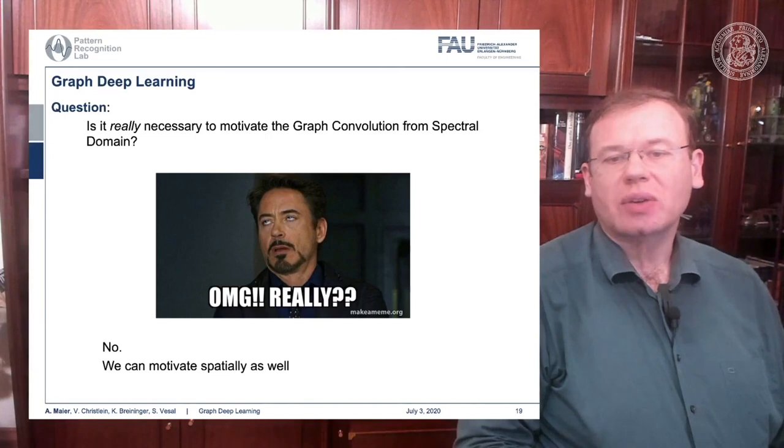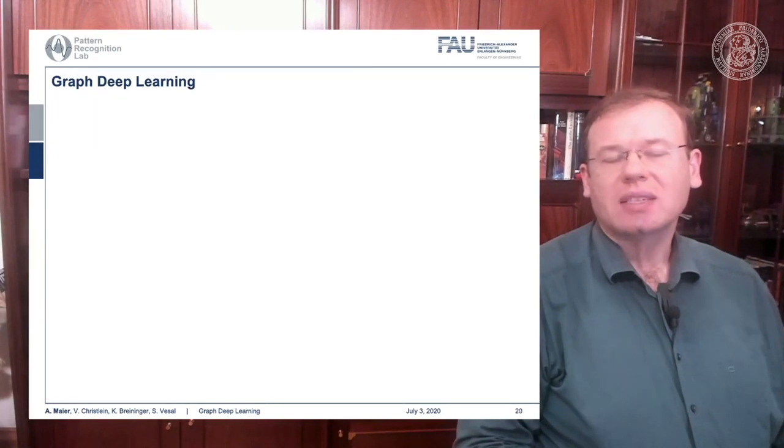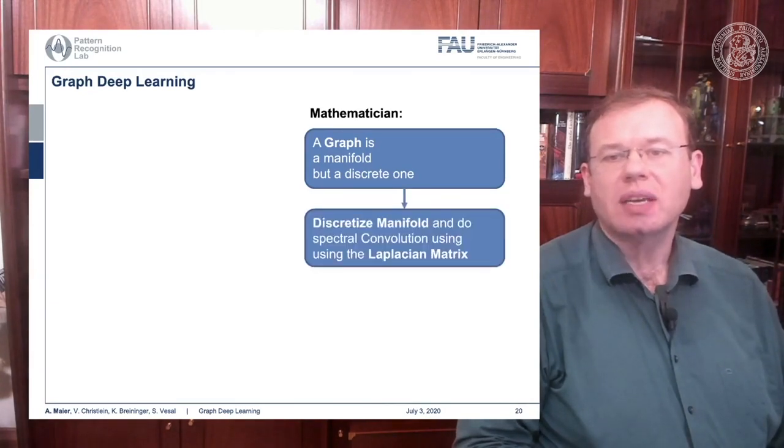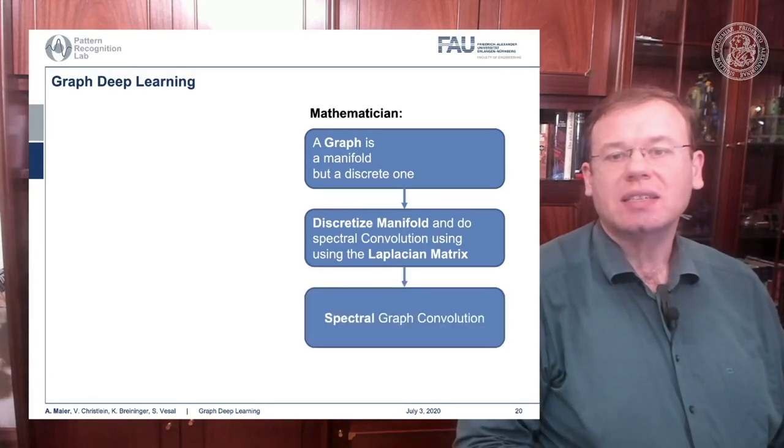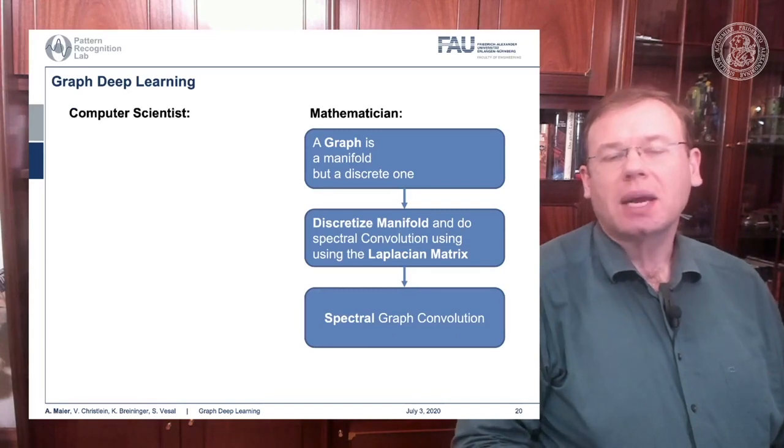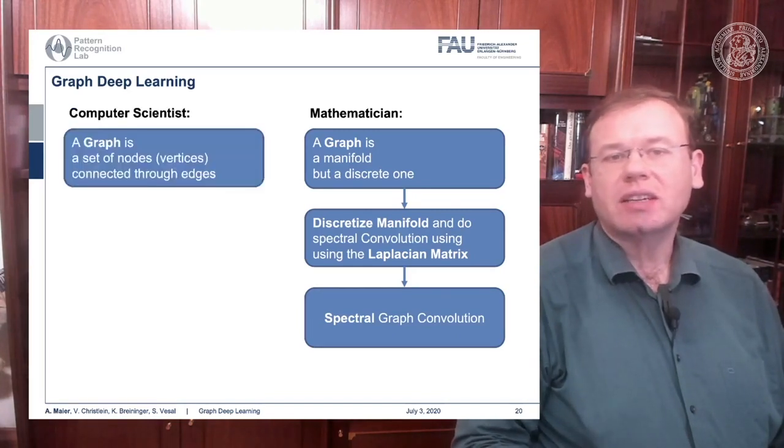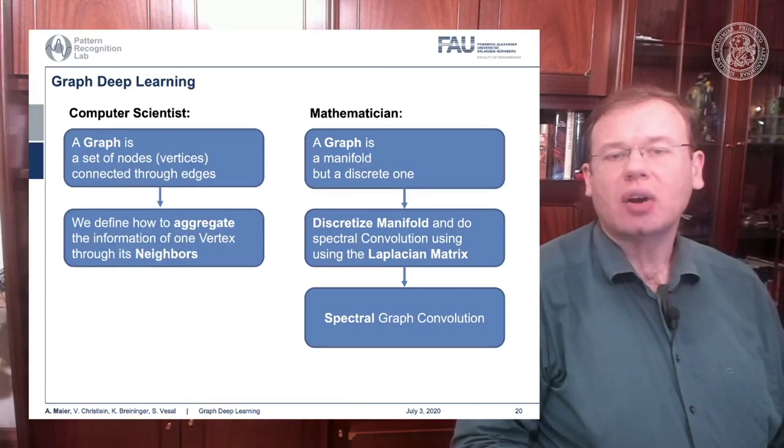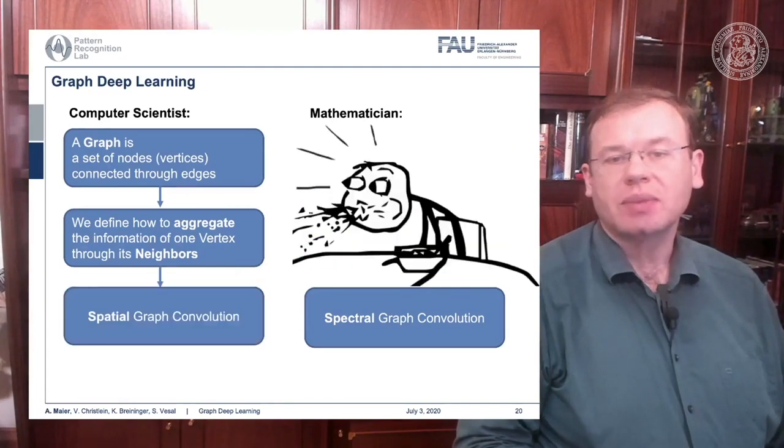We can also motivate it spatially. For a mathematician, a graph is a manifold but a discrete one. We can discretize the manifold and do spectral convolution using the Laplacian matrix, which led us to spectral graph convolutions. But as computer scientists, you can interpret a graph as a set of nodes and vertices connected through edges. We need to define how to aggregate the information of one vertex through its neighbors. If we do so, we get spatial graph convolution.